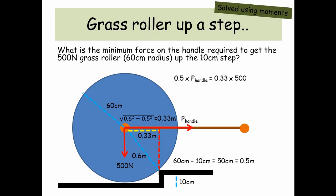So 0.5 times the force from the handle is equal to 0.33 times 500 and therefore the force on the handle is 330 newtons.